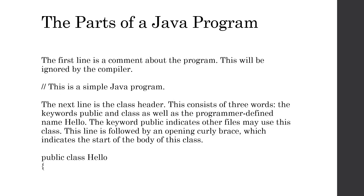Going through each one of these in a bit more detail, the first line is going to be a comment about the program. Comments are going to be things that are ignored by the compiler. In this case, we're using a single line comment - those two slashes - and the comment is going to say: this is a simple Java program.